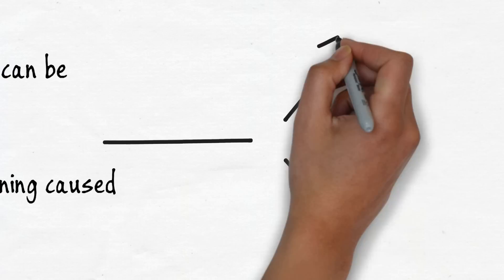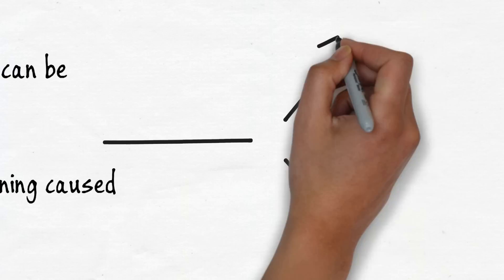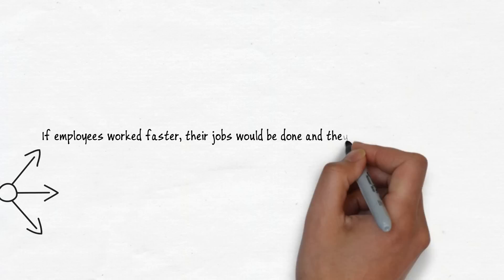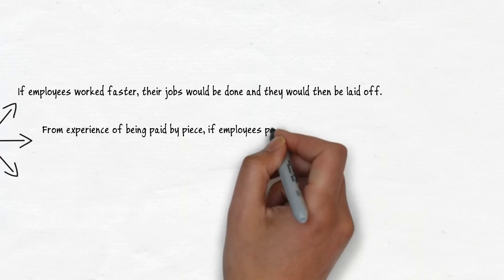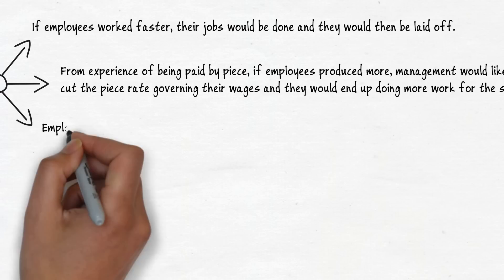Taylor had three reasons why he believed people soldiered. If employees worked faster, their jobs would be done and then they would be laid off. From experience of being paid by piece, if employees produced more, management would likely cut the piece rate governing their wages and they would end up doing more work for the same pay. Employees adhered to the rule of thumb works method handed down from generation to generation.